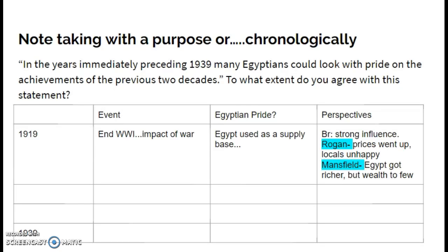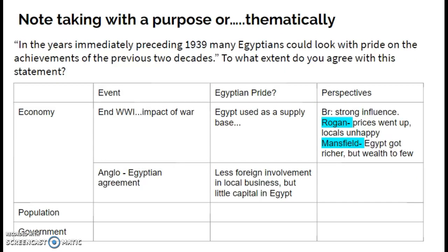As you organize your notes, there are two ways to approach a question like this. You can go in chronological order, weighing up different perspectives as you go, but writing a chronological essay can sometimes lead to narrative and you end up just listing things you know. You might prefer to start your notes thematically right from the start. In relation to the question, use columns for the event, whether it's a source of pride for Egypt, your own opinions and ideas, and in the right-hand column, ideas from historians and readings.